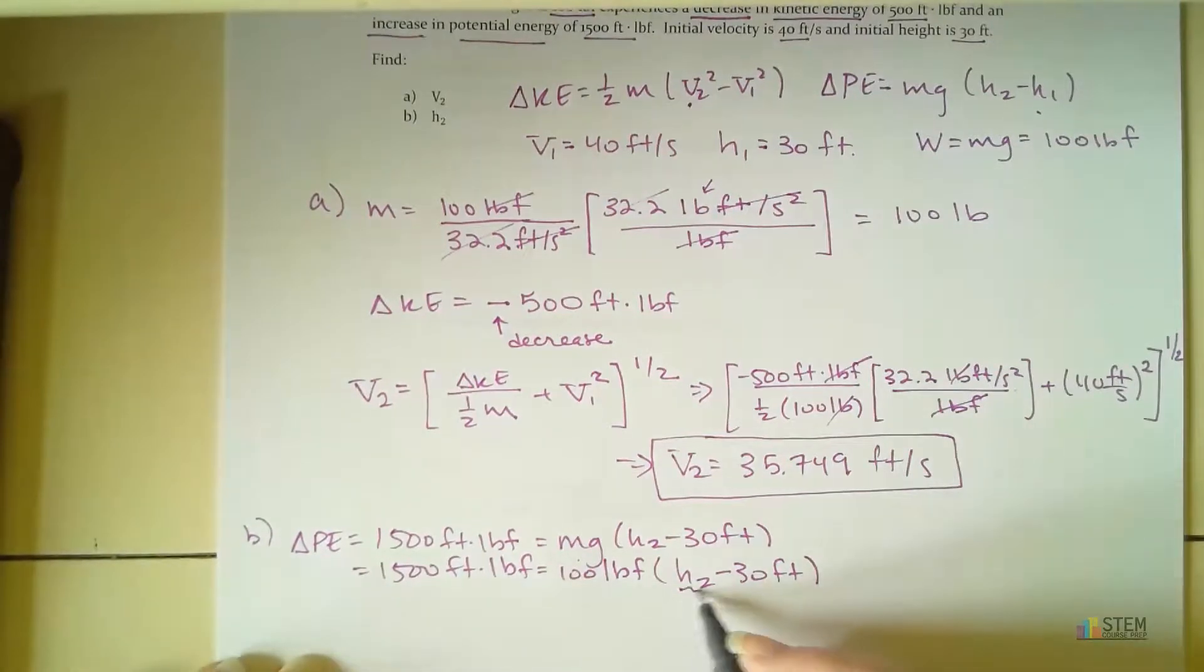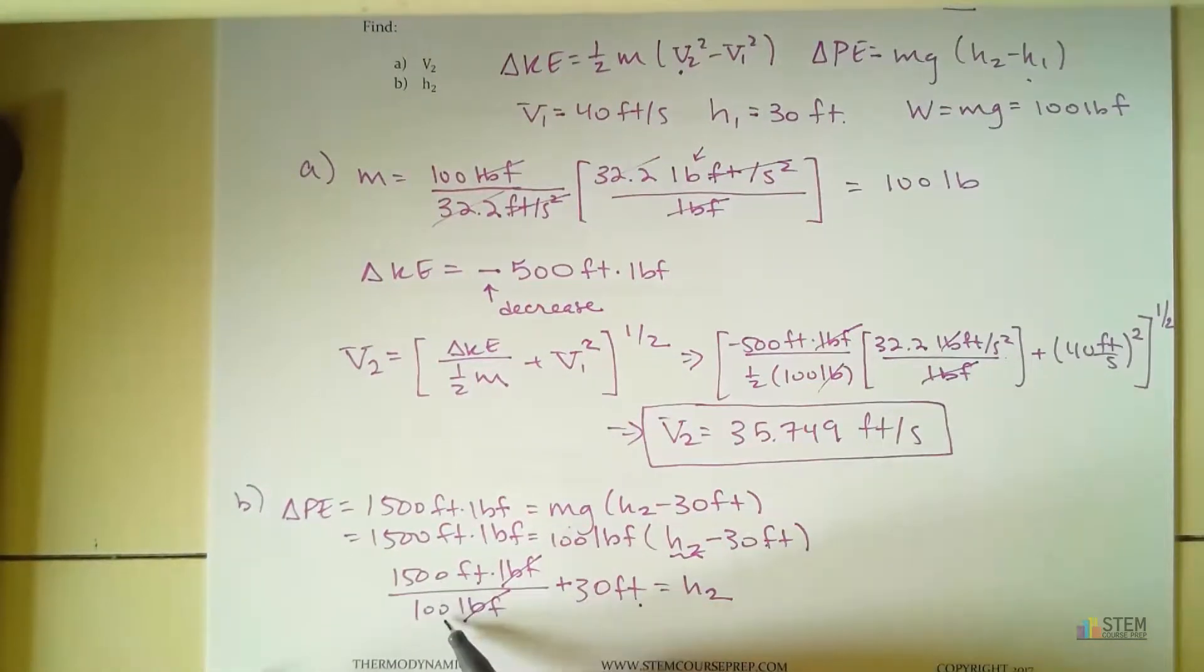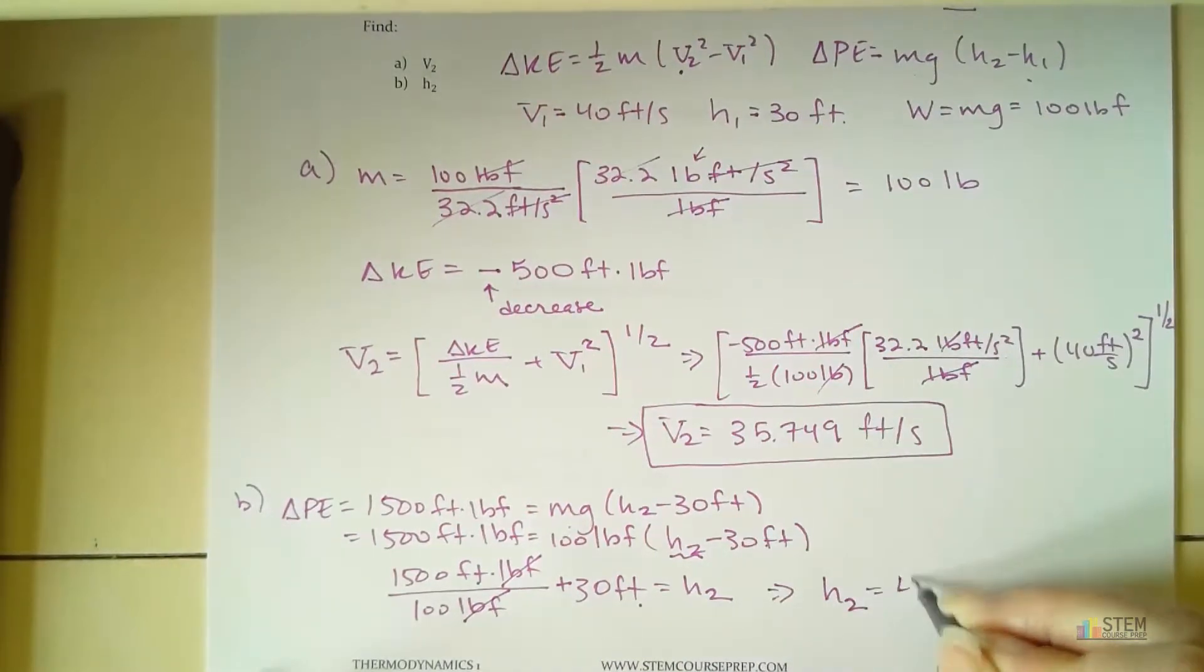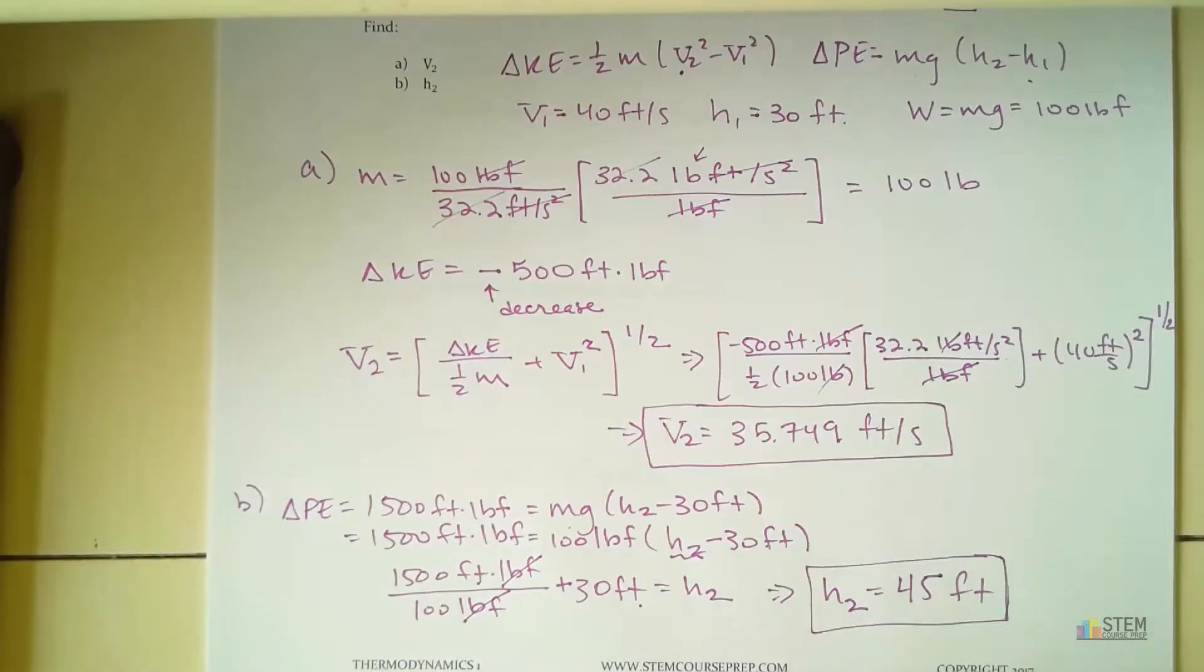And then we're going to multiply by H2 minus 30 feet. Now that we've got this, we can reorganize this equation to solve for H2. So we're going to have 1,500 feet pound force. Let's divide by the 100. And then move this 30 over. And then that'll equal H2. So H2 is what we want. So let's check the units out, because that's always a good way to see if you're doing it right. Pound force, those cancel. You're left with feet and then feet. So you can add those units. So that's perfect. So now dividing this, that'll give you 15 plus 30. So H2 is going to be 45 feet.